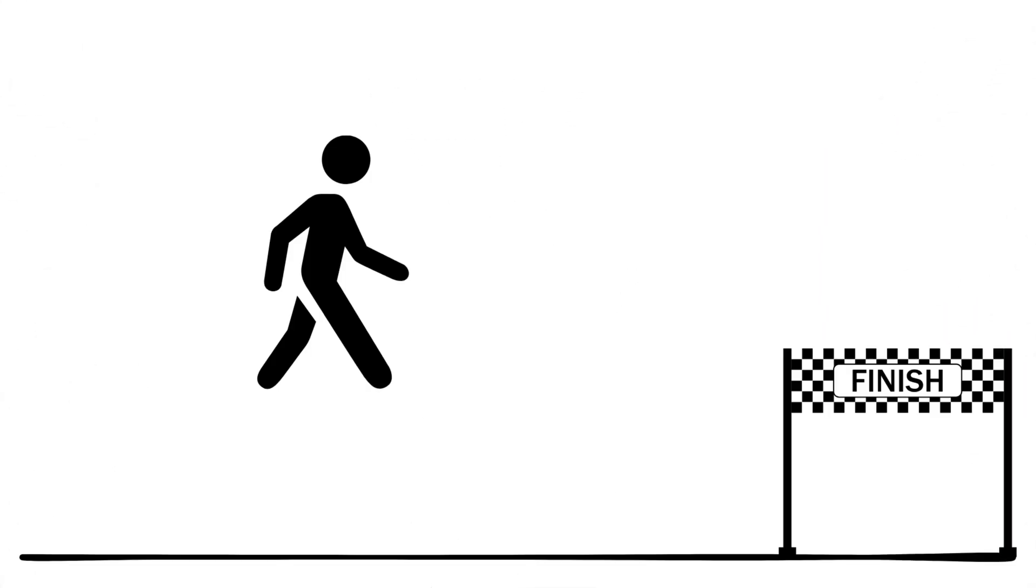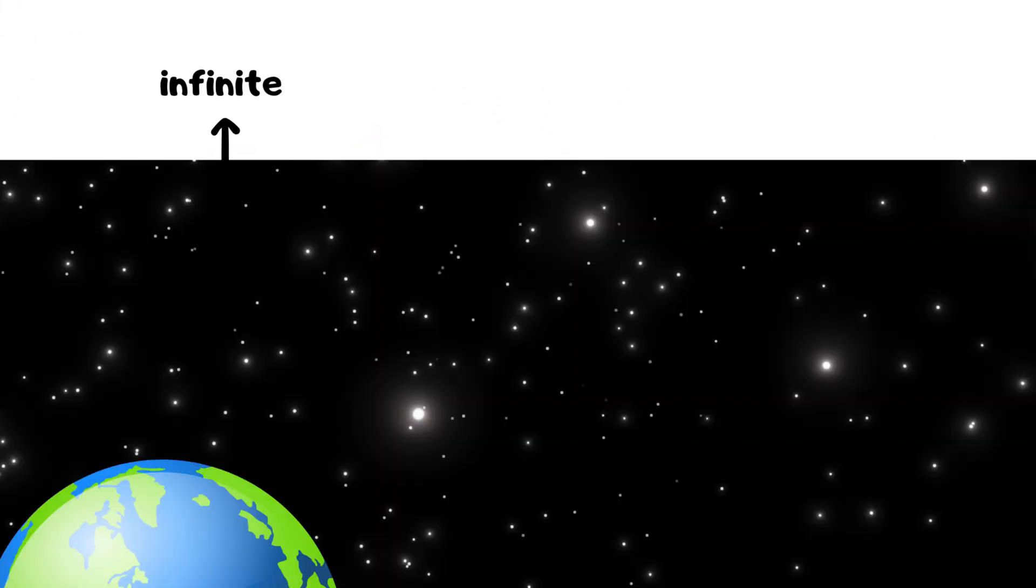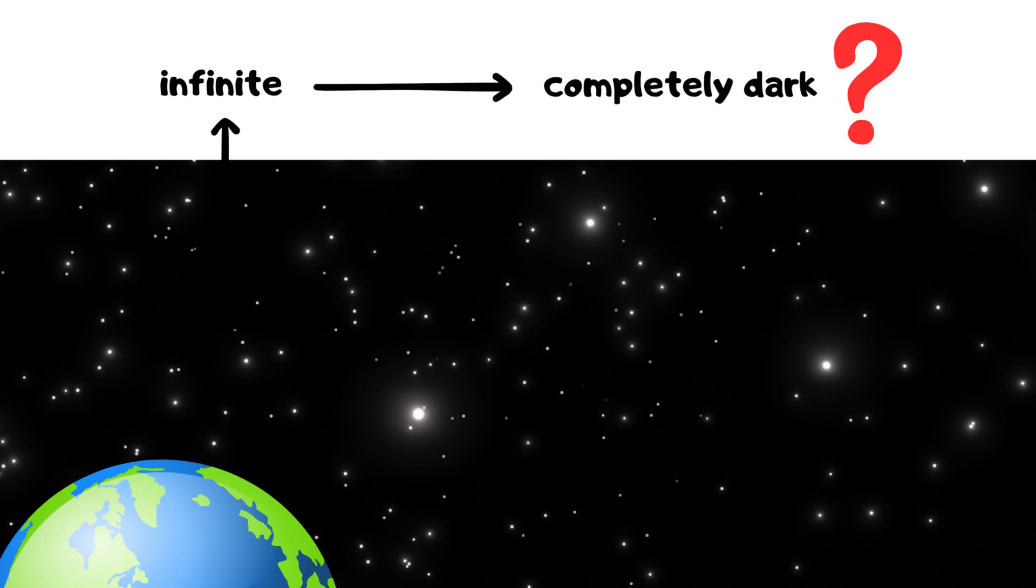Dichotomy paradox. An infinite number of steps must be taken to cover any distance, so movement is not possible. Olber's paradox. If the universe is infinite, why is the night sky completely dark?